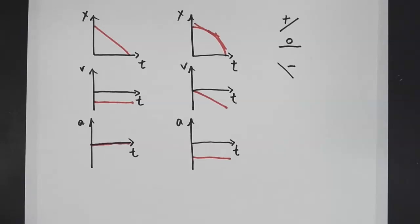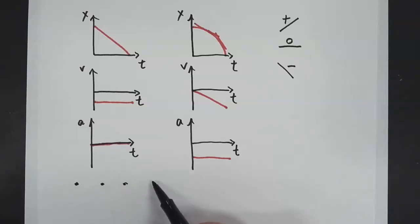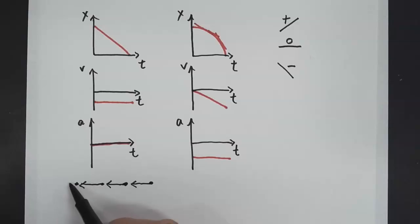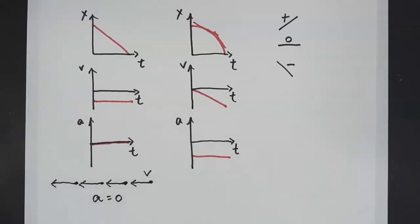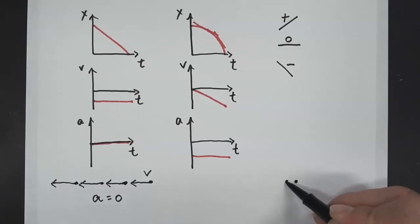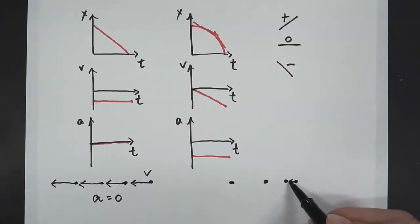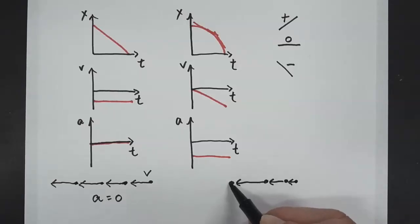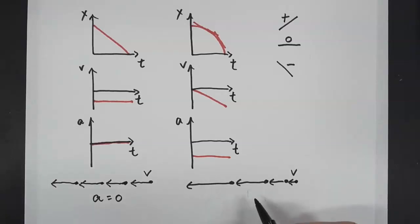Now let's look at the motion map for this. These are the dot diagrams. Because this is moving at constant speed, the dots are going to be equally spaced. I'll draw arrows to indicate the direction of the object — these are the velocity vectors. The acceleration is zero because it's moving at constant velocity. For the object moving in the negative direction but speeding up, the dots get farther and farther apart. The acceleration is also to the left — we have a negative acceleration.